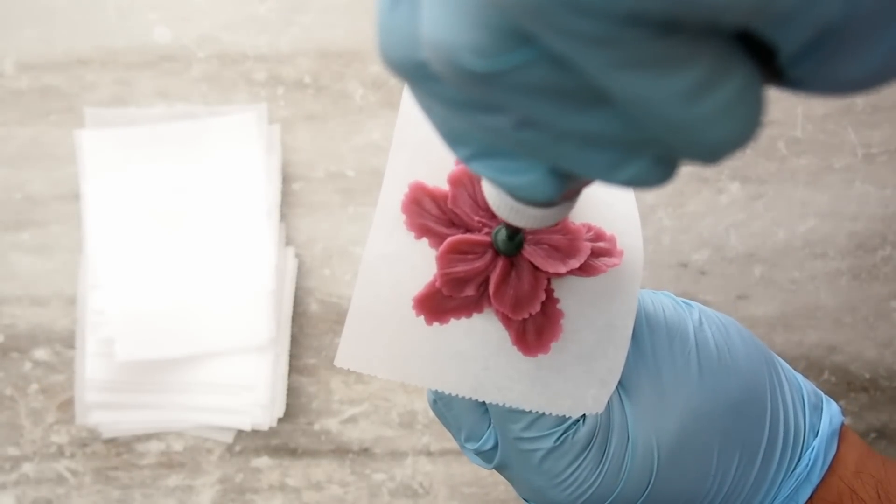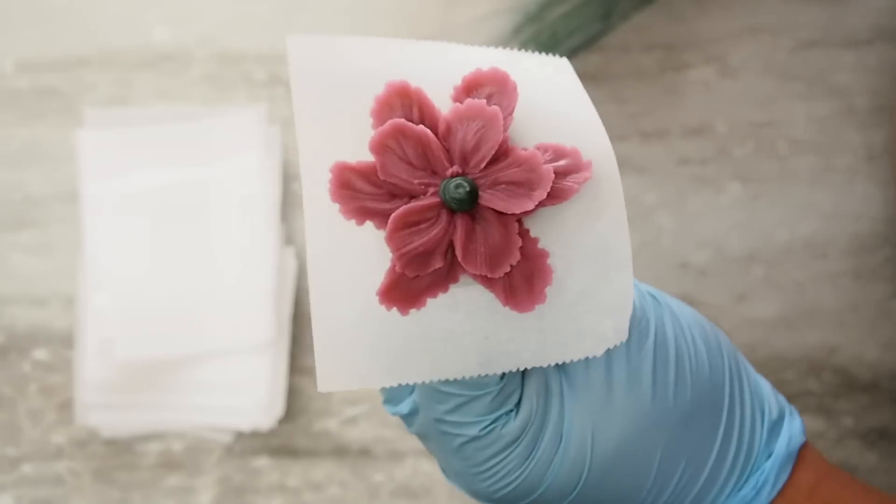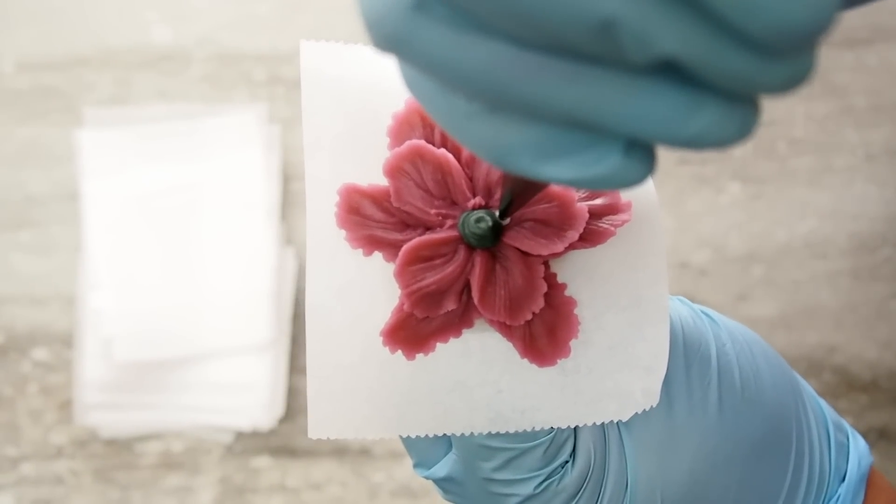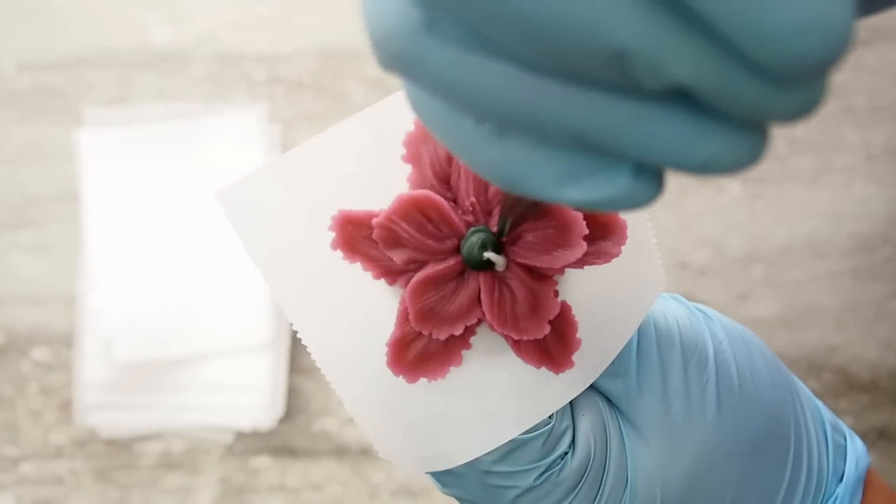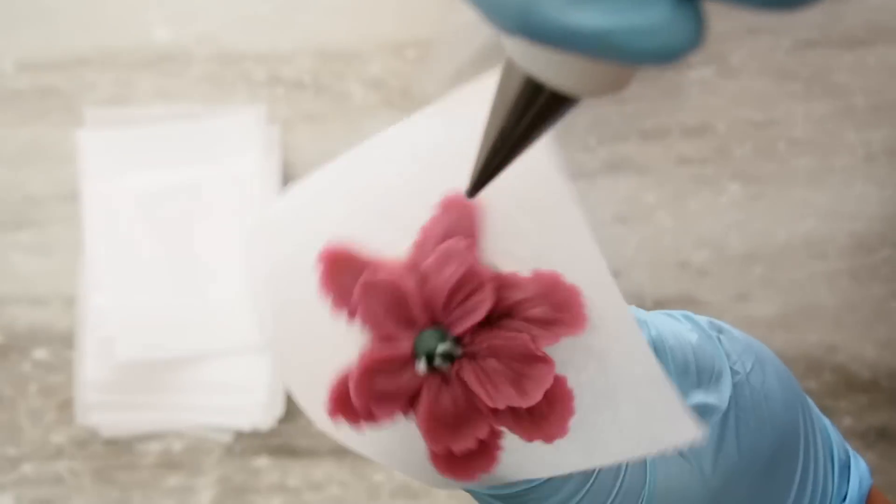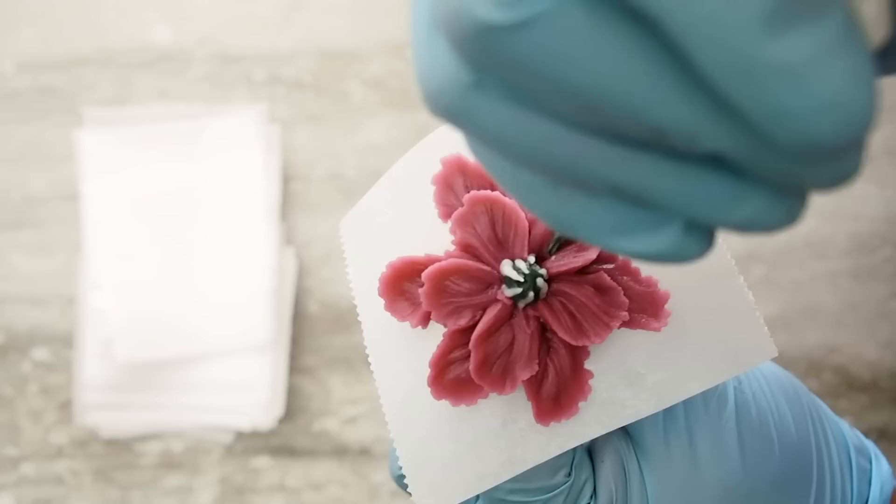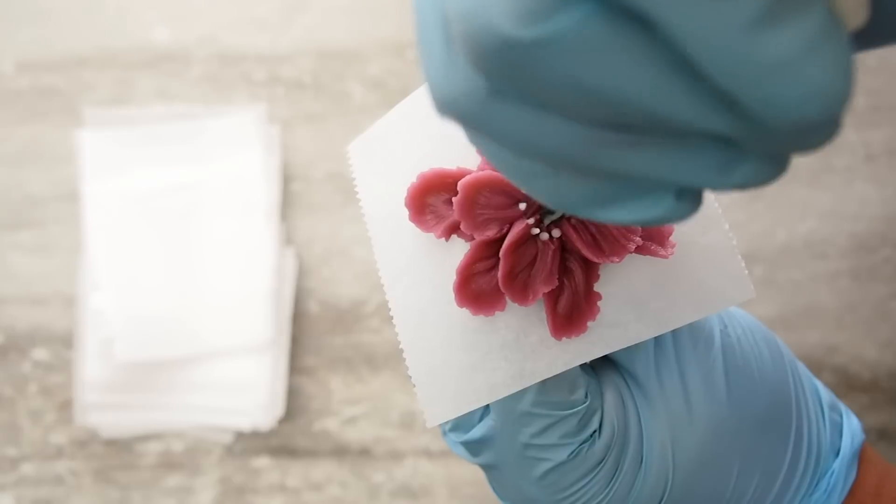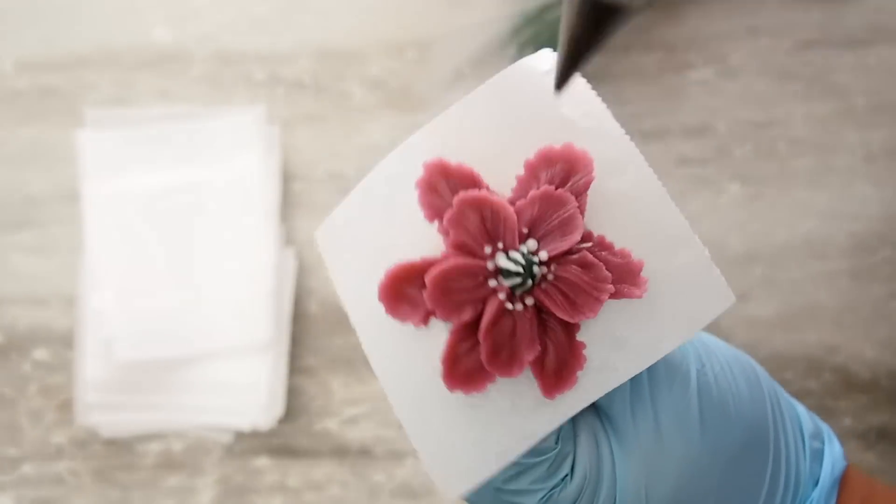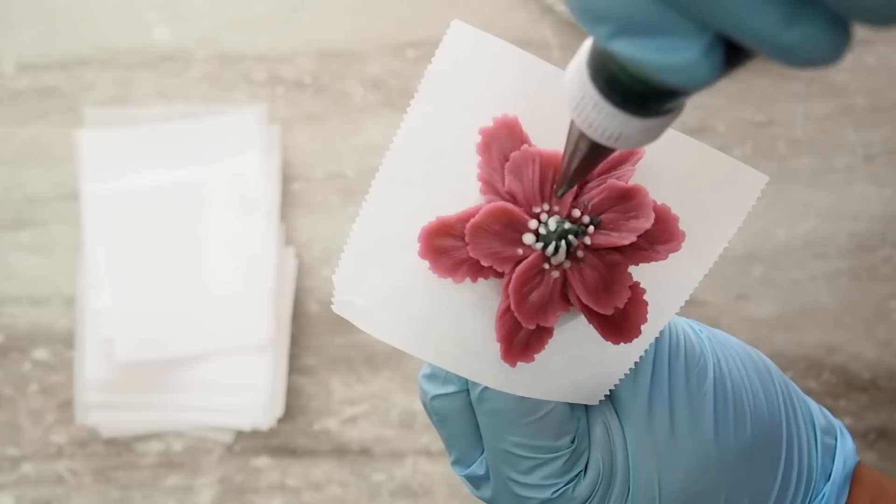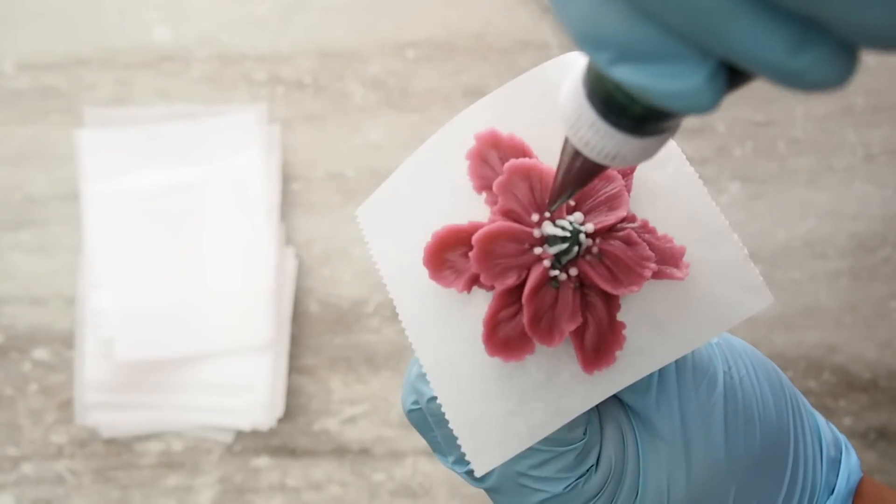With a number one tip in gray, you want to create your center of the flower. And we're creating some stamens with a number one in white. And I'm going around and on top of the little ball that I made. And now we're creating little seedling type of stamens and making little dots in a gradient effect along with dots in gray as well.